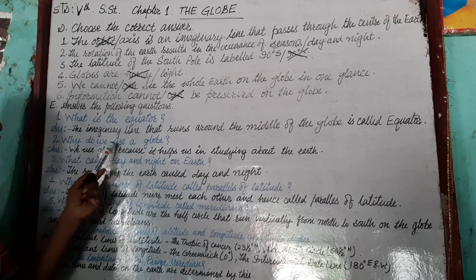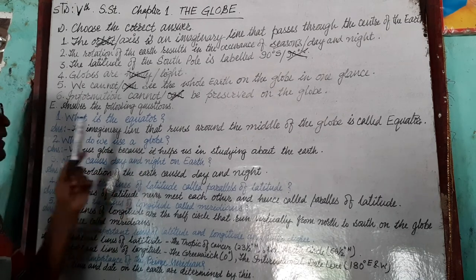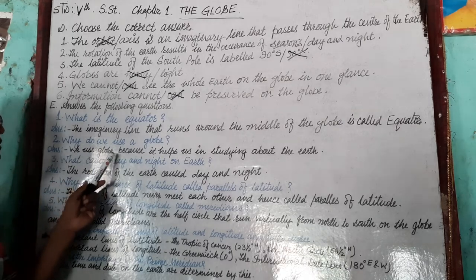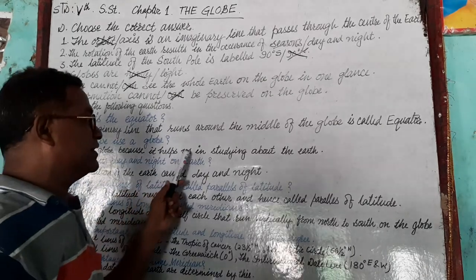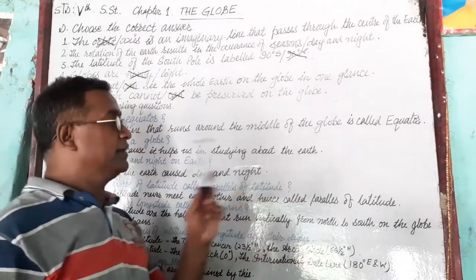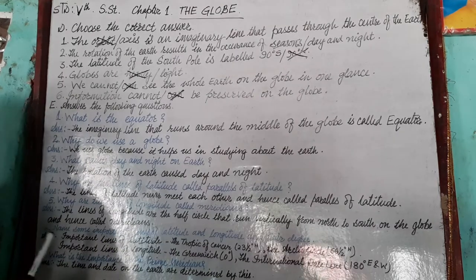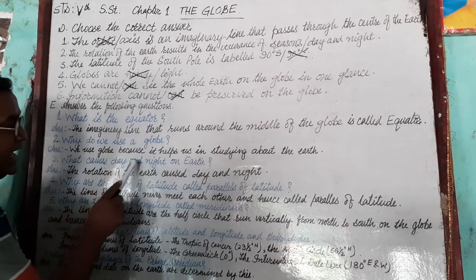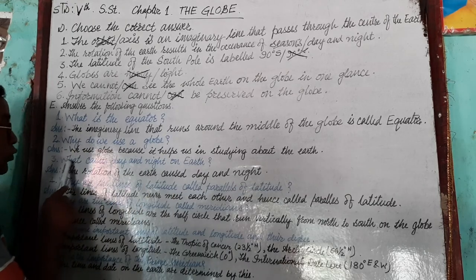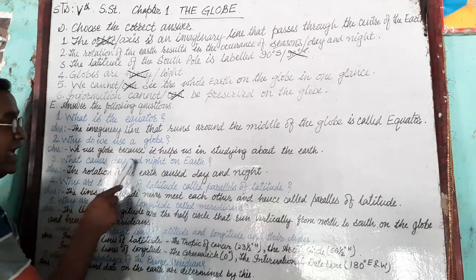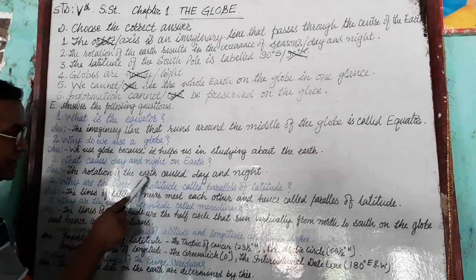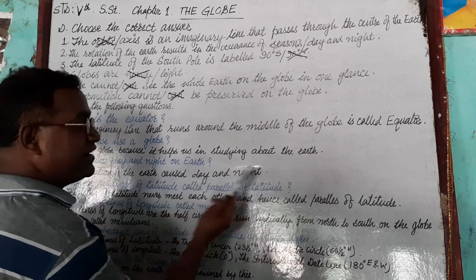Second question: Why do we use a globe? We use the globe because it helps us in studying about the earth. Next question: What causes day and night on the earth? The rotation of the earth causes day and night.